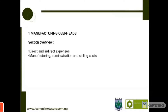Direct expenses refers to those expenses that are incurred directly, attributable to the manufacturing or purchase of any particular item. In the manufacturing setting, direct expenses refers to those expenses incurred directly in the process of manufacturing that particular product. Indirect expenses refers to those expenses incurred in the manufacturing organization, but they are not directly attributable to the production of that product.